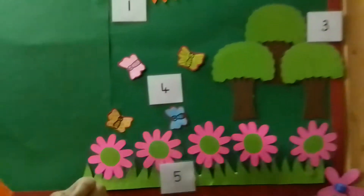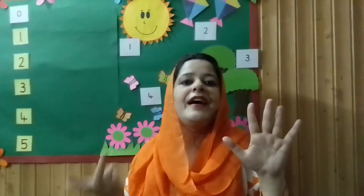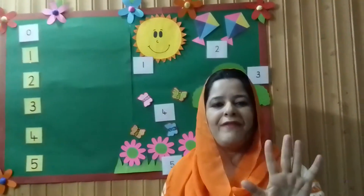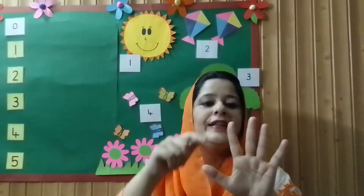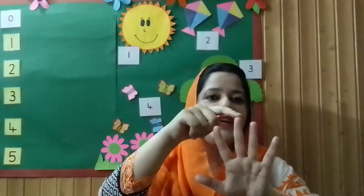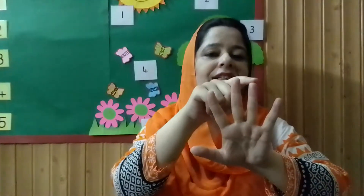Do you remember the poem of 5 fingers? Five little fingers, where are you? Here we are, here we are, how do you do? Five little fingers, where are you? Here we are, here we are, how do you do? 1, 2, 3, 4, 5. Yes, these are 5 fingers. Daddy finger, mama finger, brother finger, sister finger, and baby finger. Yes, I have 5 fingers on my hand.